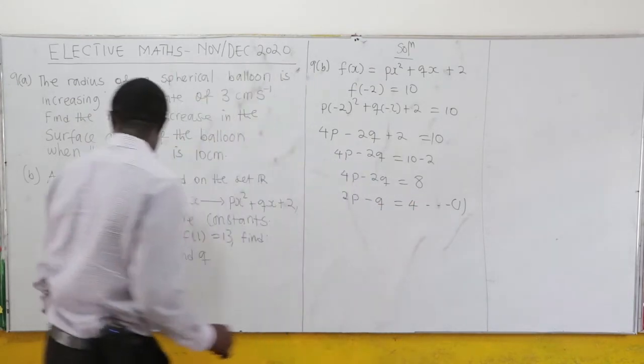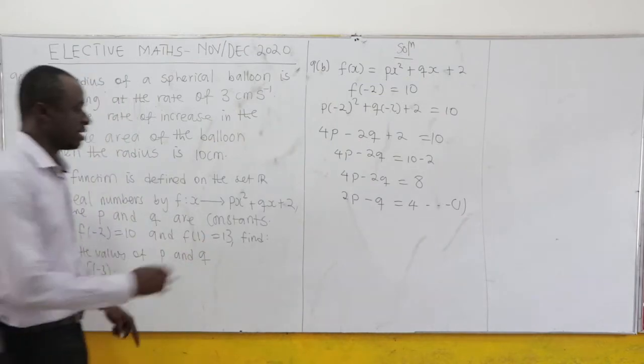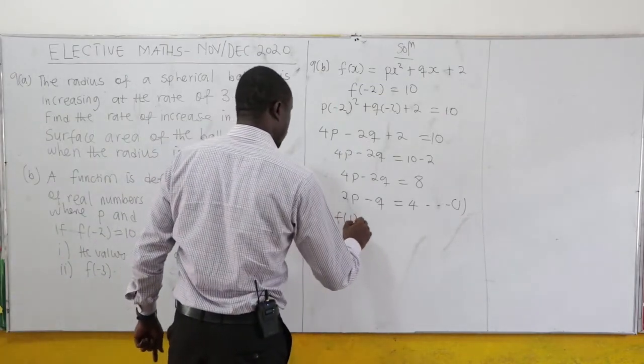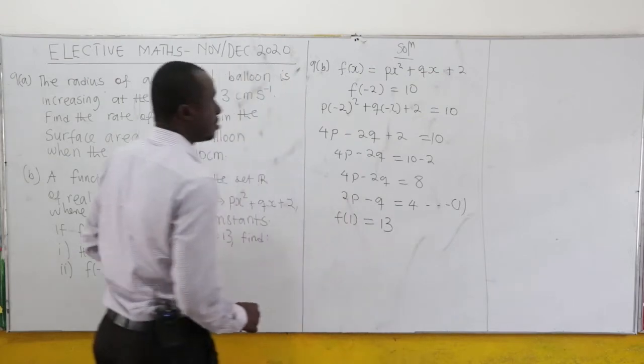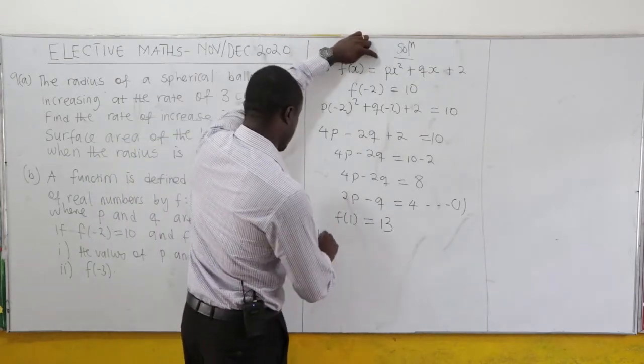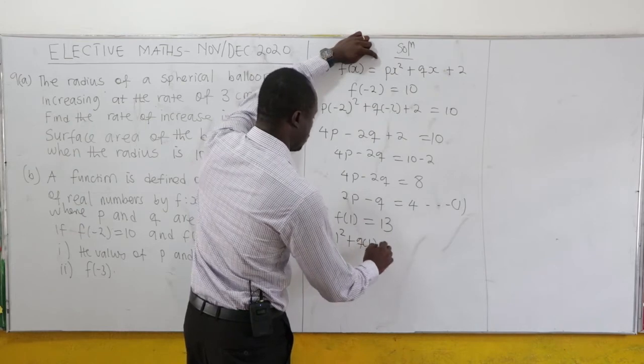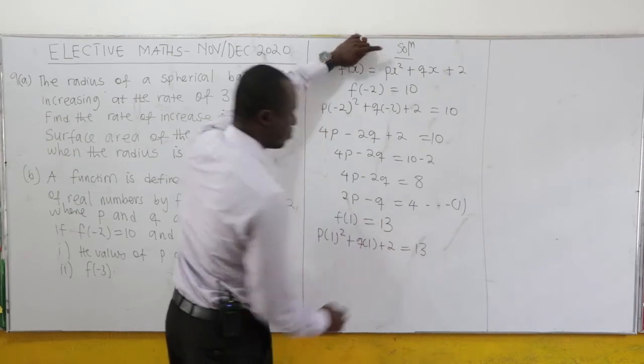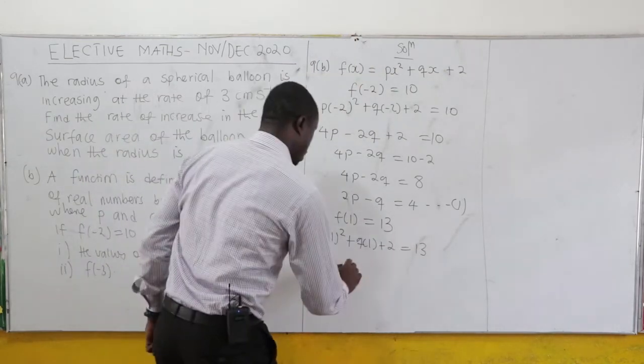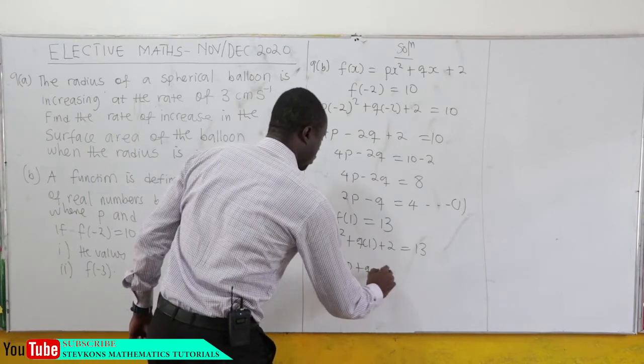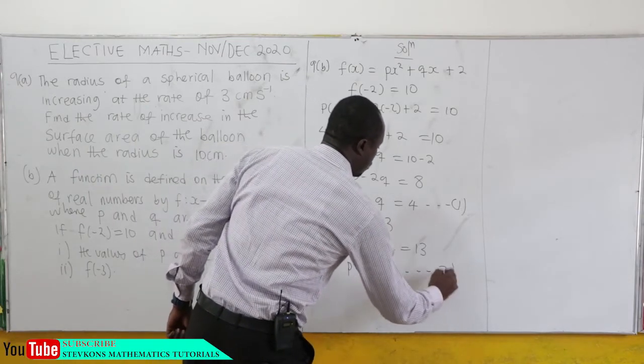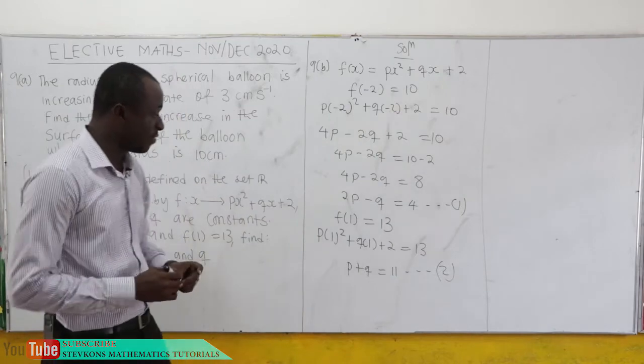We're also given that f(1) = 13. Substituting x = 1, we get p + q + 2 = 13, so p + q = 11. That's equation 2.